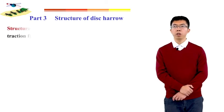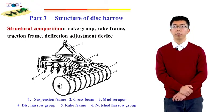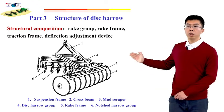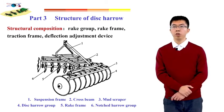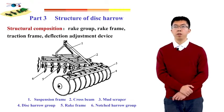In this part, we will learn the structure of disc harrow. The structure includes disc group, disc frame, traction frame, and deflection and adjustment device. The specific structure is summarized on this slide. Number one is the suspension frame, number two is the cross beam, number three is the mud scraper, number four is the disc harrow group, number five is the disc frame, and number six is the notched harrow group.